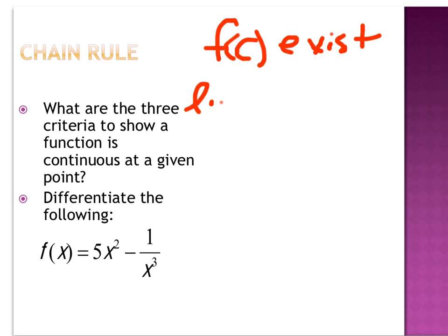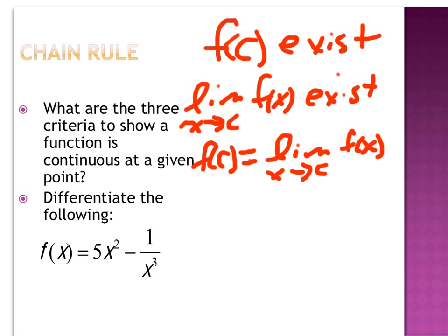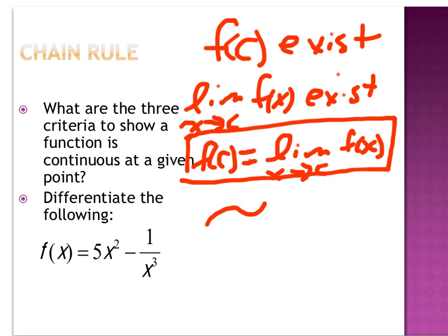You also have to show that the limit for that function as x approaches c has to exist. And the most important thing is that both of these have to be equal to one another — your answer has to equal the limit as x approaches c. If this last one is not met, then you get a function where there's an answer and there's a limit, but they are not necessarily the same. This is the key criteria to show that the function is continuous.